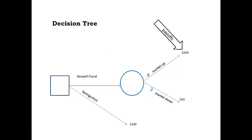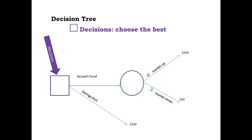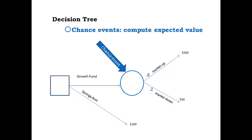The decision tree is now completely set up, with squares representing decisions and circles representing chance events. Branches are labeled with probabilities for chance events and payoffs where they occur — here at the future end of the tree. To solve a decision tree, we work from right to left, from the future back to the present. Wherever there is a square (a decision), choose the best following branch, because the decision maker has control. Wherever there is a circle, compute expected value, because these events are risky and subject to chance.